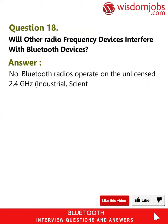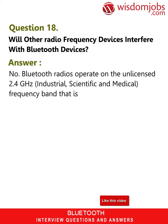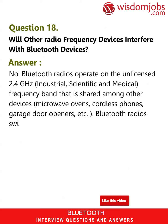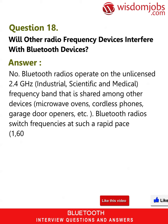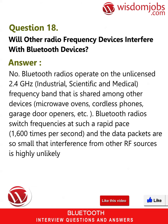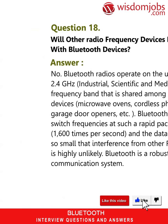Question 18: Will other radio frequency devices interfere with Bluetooth devices? Answer: No. Bluetooth radios operate on the unlicensed 2.4 GHz industrial, scientific, and medical frequency band shared among other devices such as microwave ovens, cordless phones, and garage door openers. Bluetooth radios switch frequencies at 1,600 times per second and the data packets are so small that interference from other RF sources is highly unlikely. Bluetooth is a robust communication system.